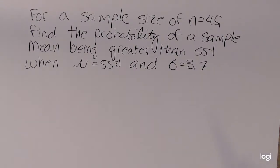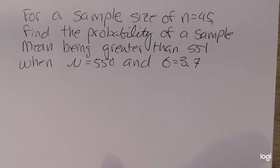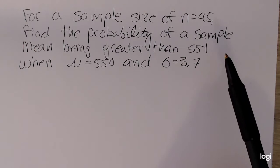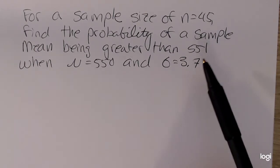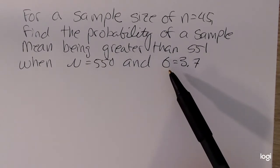For this video, I'd like to do an example, a very basic example of the central limit theorem. For a sample size of n equals 45, find the probability of a sample mean being greater than 551 when mu equals 550 and sigma equals 3.7.